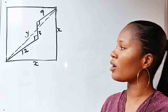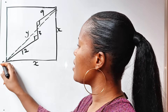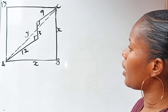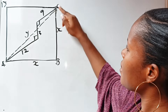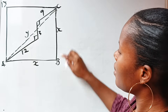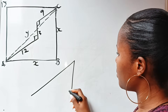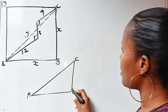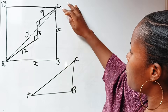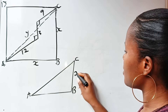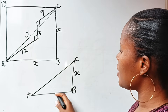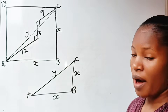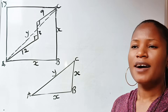Now let's draw out the right angle triangle we just formed. Let's call the vertices A, B, C, and D. We draw out triangle ACB: this is A, this is C, this is B. Recall that BC is x and AB is x as well — not drawn to scale. The diagonal is y.